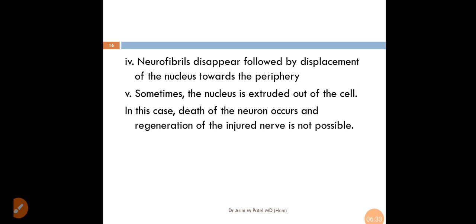Sometimes, the nucleus is extruded out of the cell. In this case, death of the neuron occurs and regeneration of the injured nerve is not possible.